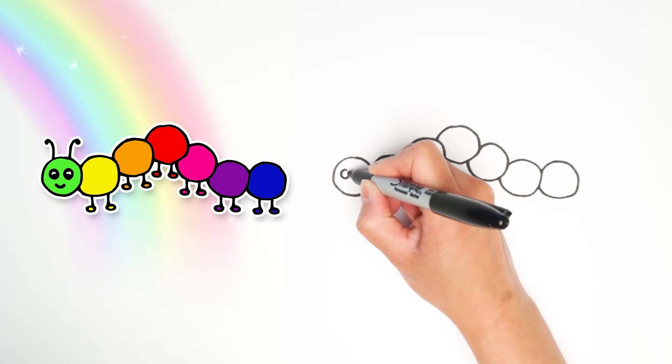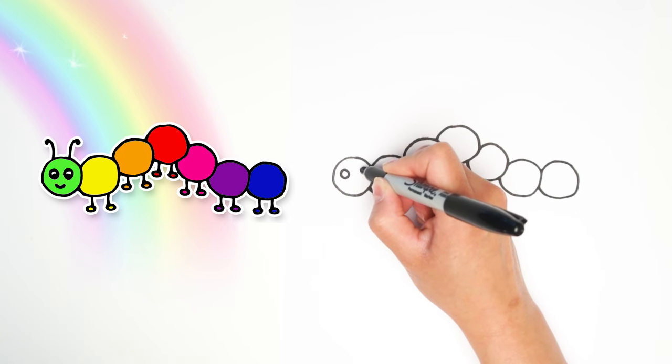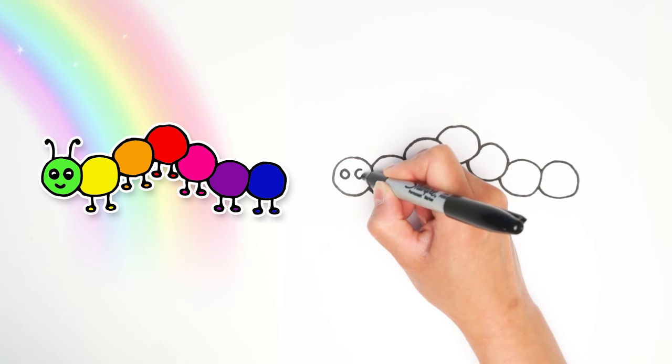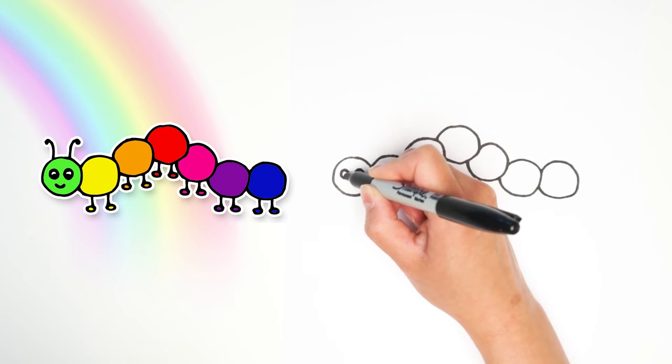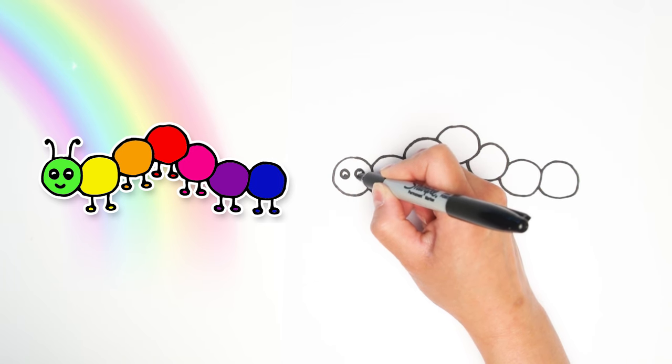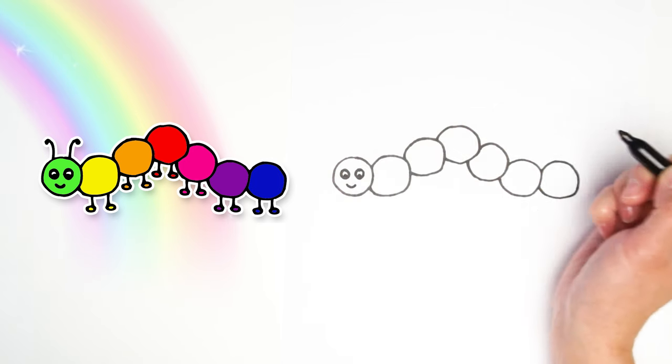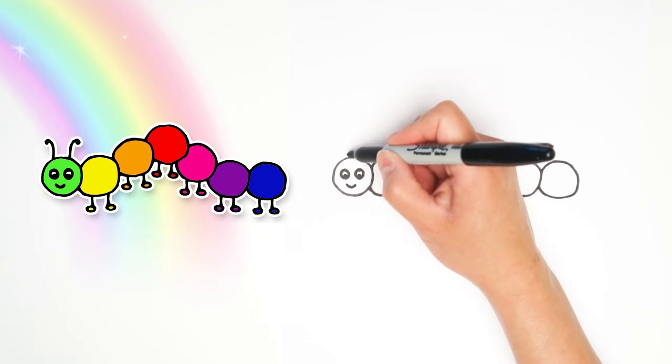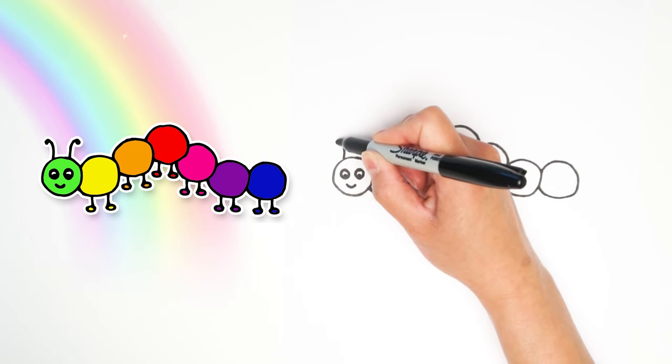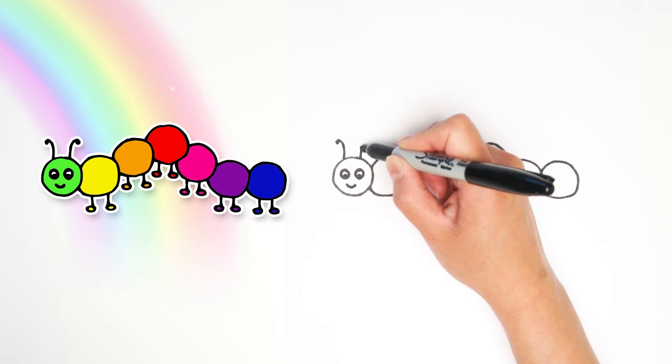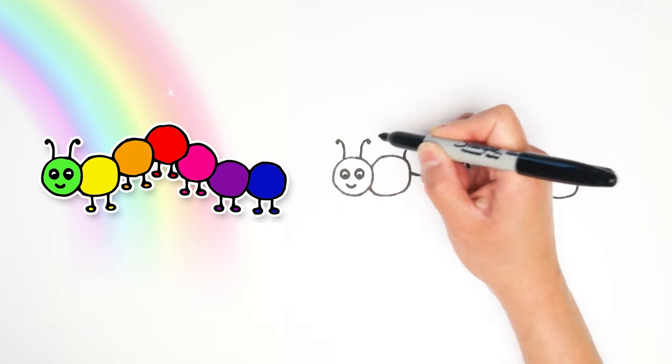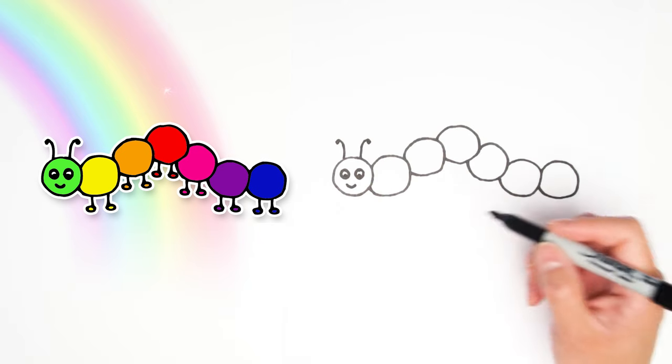Next let's go back to the first circle, the head, and add some eyeballs. Two little circles with a black dot inside. And a little smile. Great. Let's add two antenna up here. One here and two here. All right.